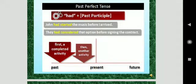Again this is one more example had plus past participle. John had started the music before I arrived. They had considered that option before signing the contract. So students, the first a completed activity then another activity. If one activity is completed then another activity occur, that time we use past perfect tense.